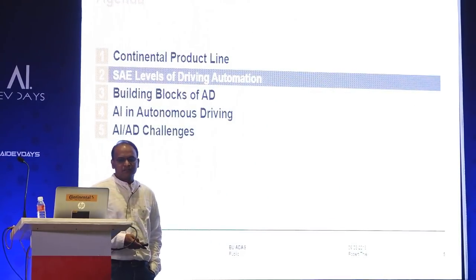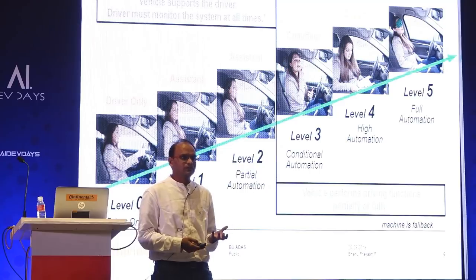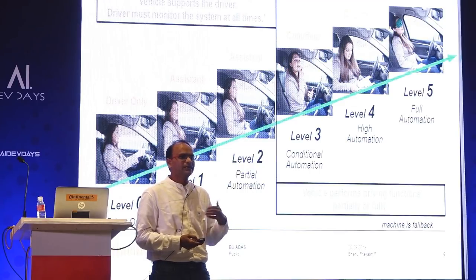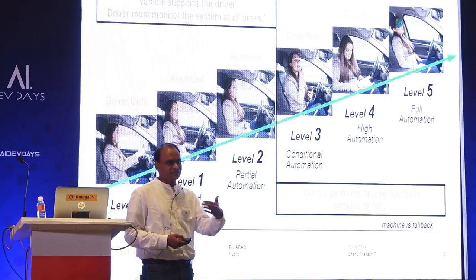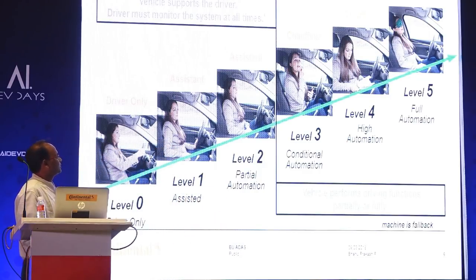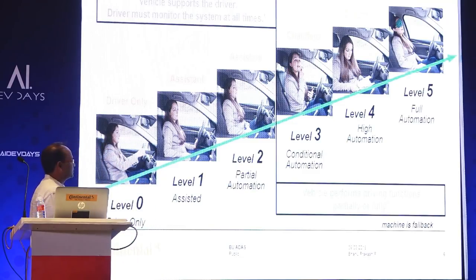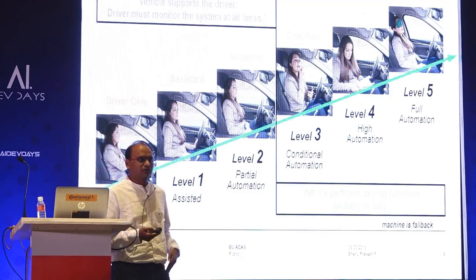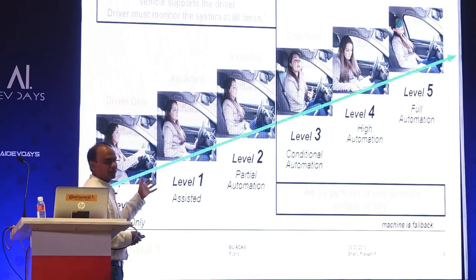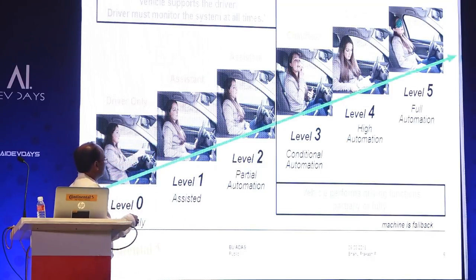Coming to the SAE levels of driving automation — automated driving cannot happen in a day or two. It's a revolutionary process that has to be achieved through evolution. There are evolutionary steps defined by SAE. Level zero has only the driver with no machine assistance. Level one covers current ADAS features like emergency braking assist, handling either lateral or longitudinal control.